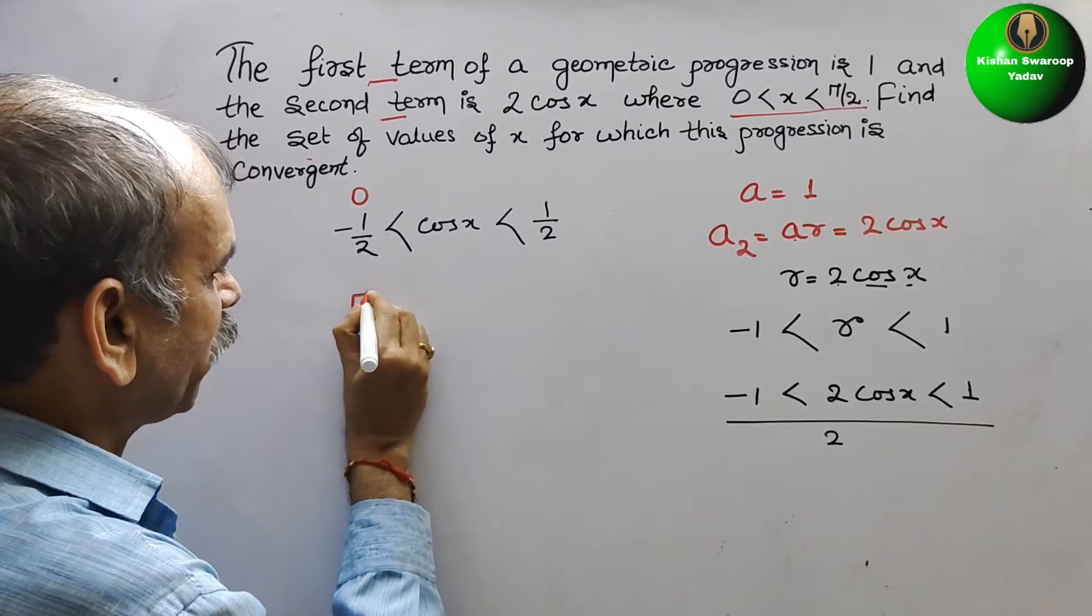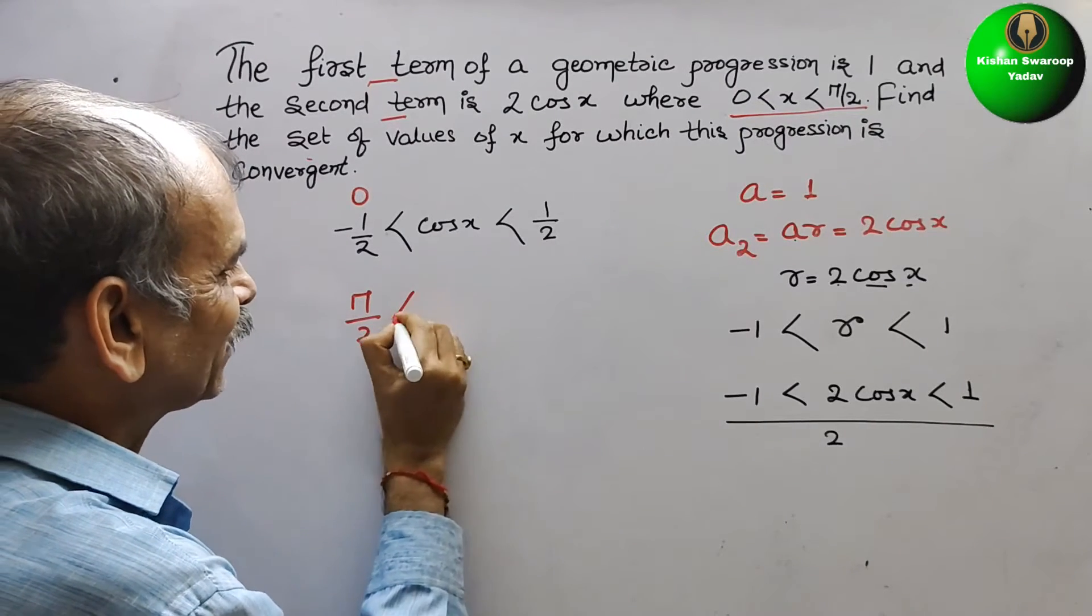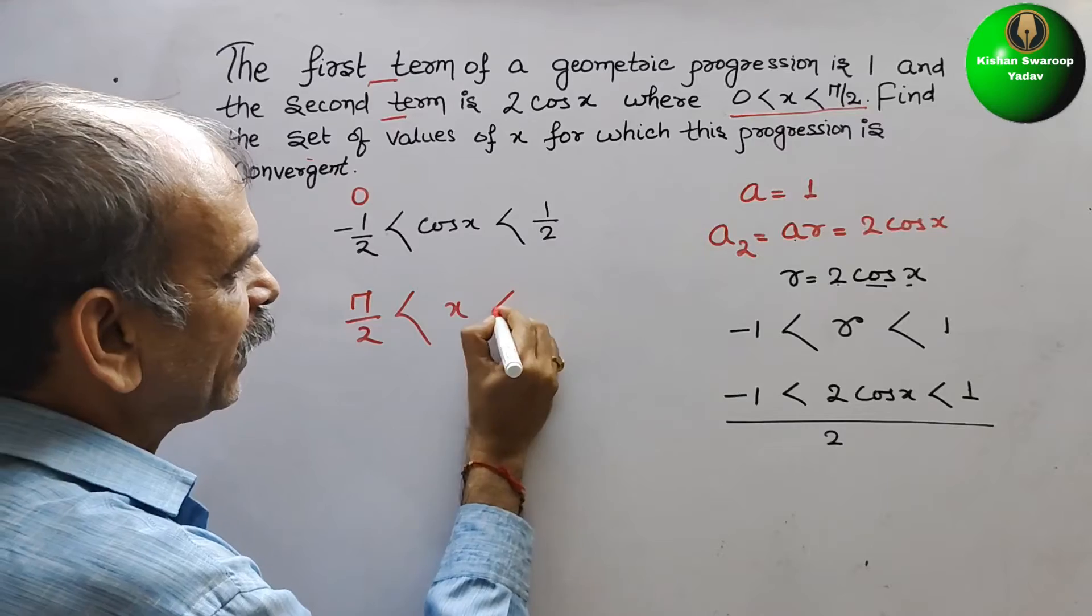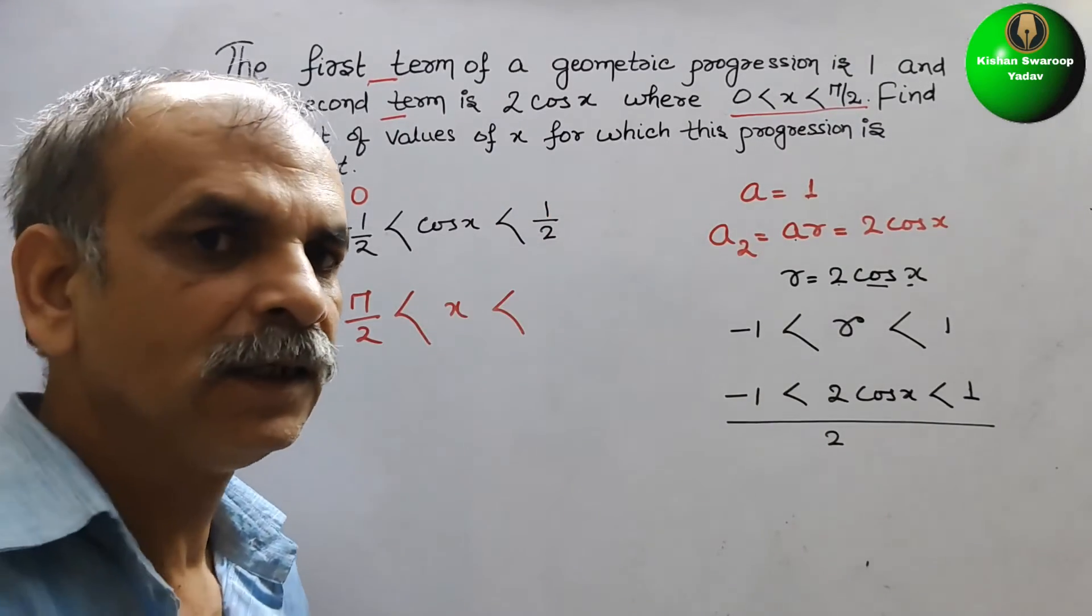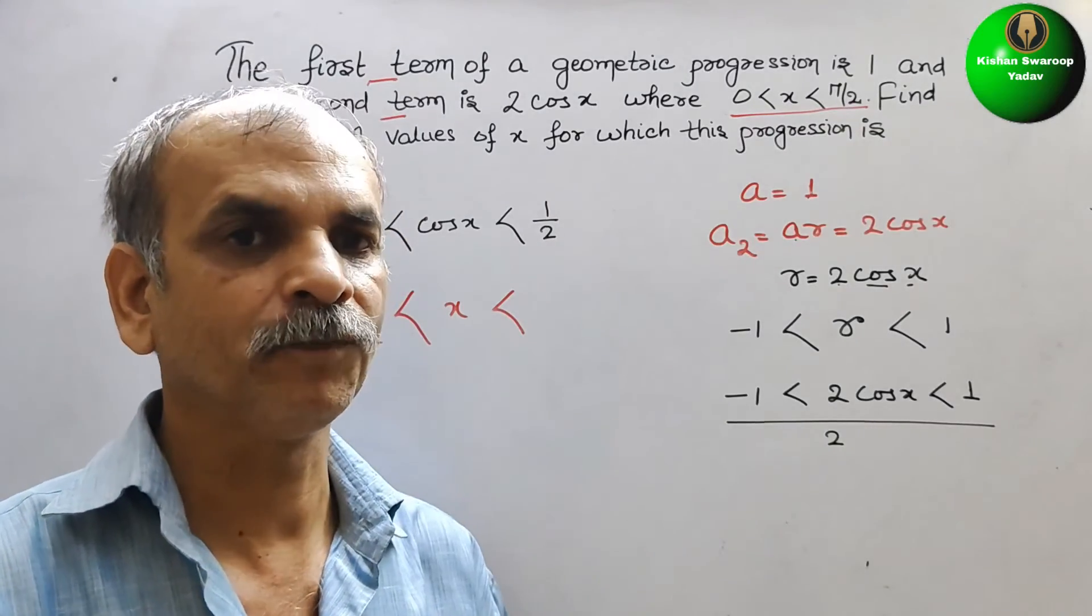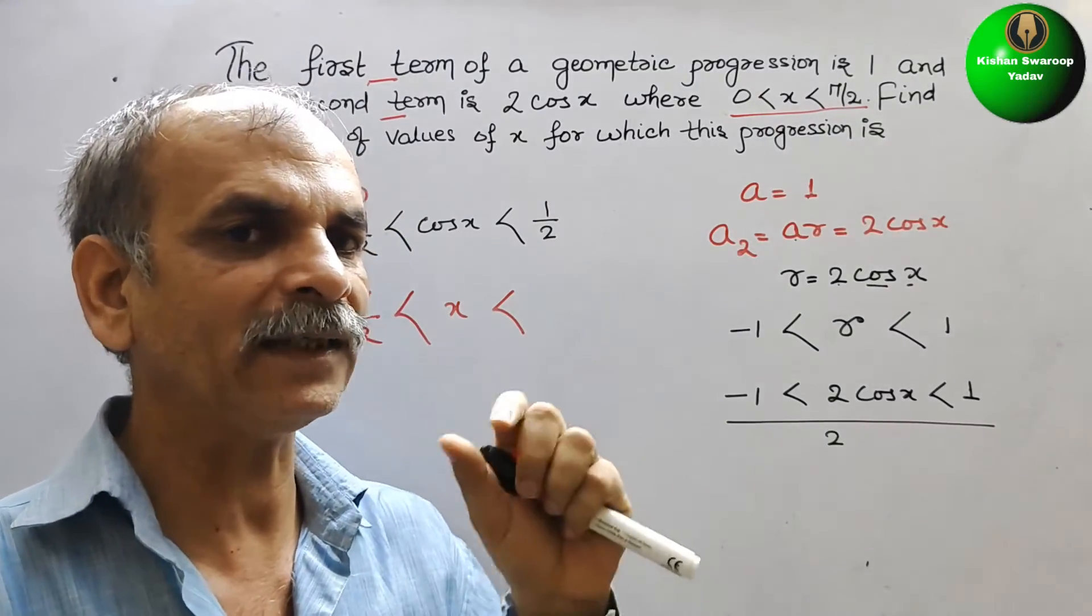So, here it will come as π/2 less than x less than, here 1/2 is there. 1/2 lies at which place? It lies at 60 degrees. That means it is π/3.